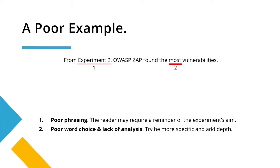Another issue here is word choice — specifically the word 'most.' It's not great. What is accurate? What do the false positives tell us about the data? More fundamentally, is 'the most vulnerabilities' really the key takeaway from this experiment? What if you should be looking at something else, like accuracy, rather than the most? So was that the right takeaway? Overall, as you would imagine, this wouldn't exceed a good mark.